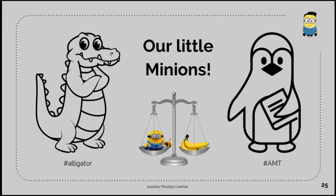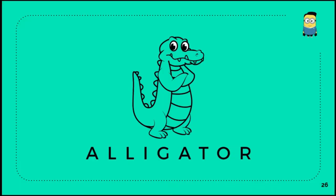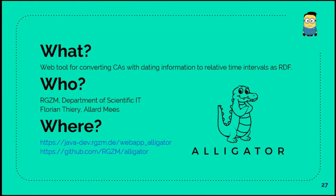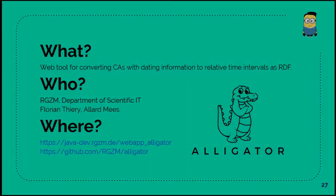These are two little minions, one is called Alligator and the other one is AMT, so it's Amt in German. First thing, the Alligator, what is it? It's some kind of web tool for converting CA with dating information to a relative interval using RDF in the end, and it's something that we at the ACZM developed at the Department of Scientific IT.